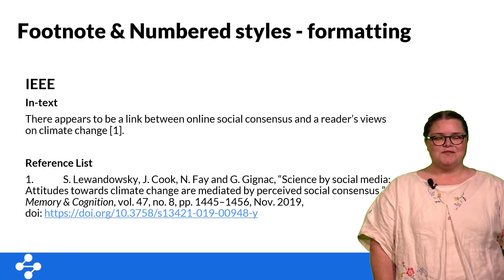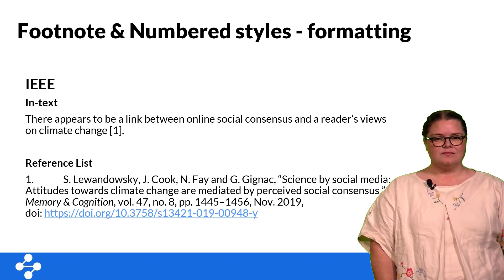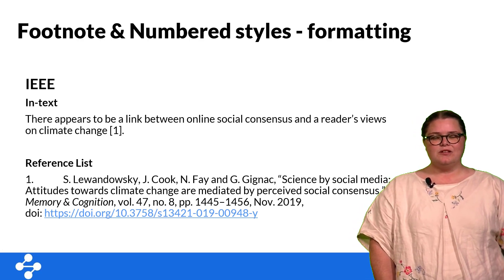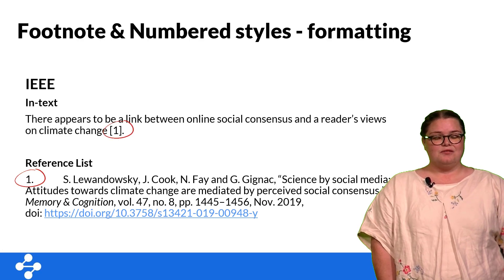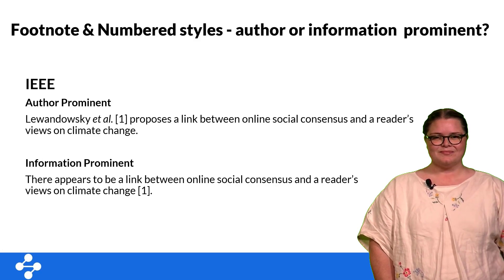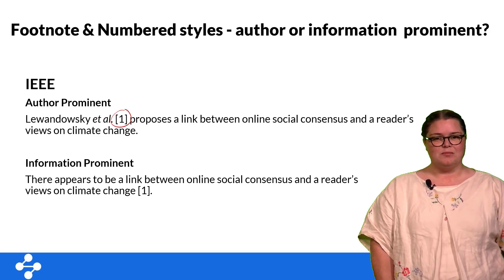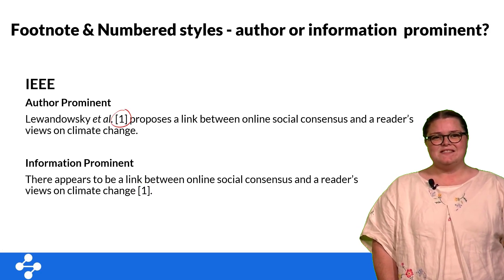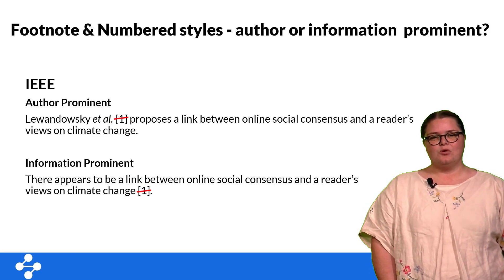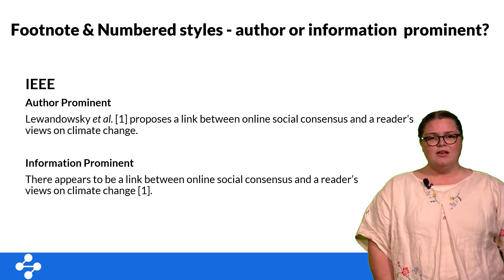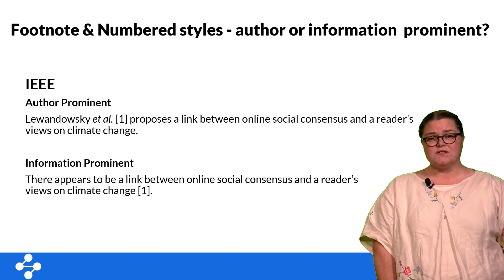The second category of in-text referencing you may come across are footnote systems. These also require an in-text citation but are generally in the form of a number which then directly corresponds to a number in the reference list and/or footnote at the bottom of the page. Common footnote styles include Chicago, Vancouver and IEEE. Similar to the author-date system, the in-text citations are placed next to the author's name when mentioned or next to the information used. The grammar of your sentence is impacted in the same way, so read the sentence out loud ignoring the citation number or information inside the brackets. For differences in formatting of the citations, follow your style-specific guide.